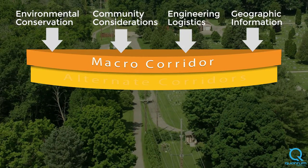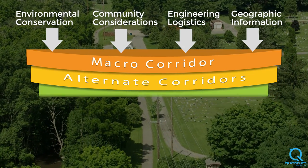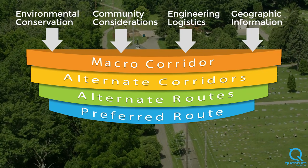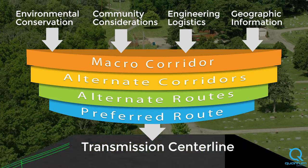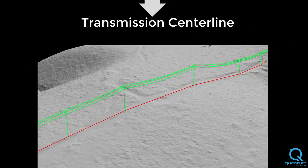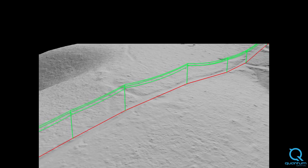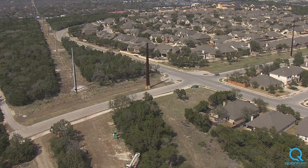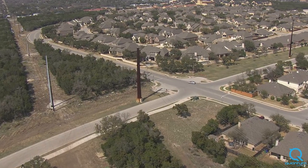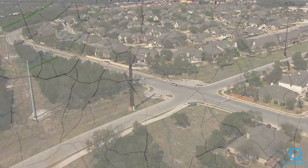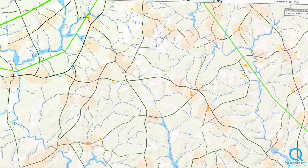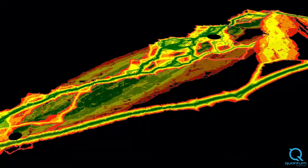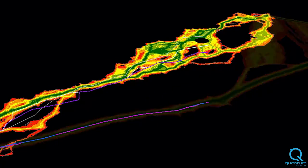The resulting siting methodology provides a framework for identifying siting criteria and evaluating study areas to provide objective guidance for new transmission lines. The methodology has been used internationally on more than 250 projects. To automate and standardize implementation of the siting process, Quantum Spatial developed Corridor Analyst software to provide the best-in-class solution for transmission line siting analysis.